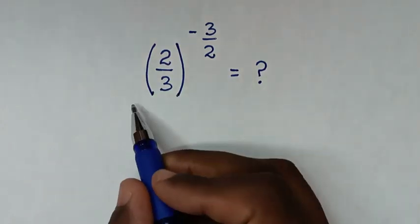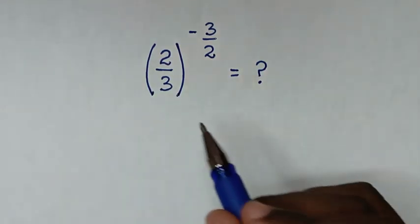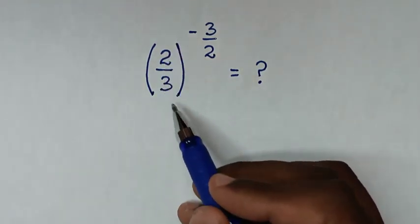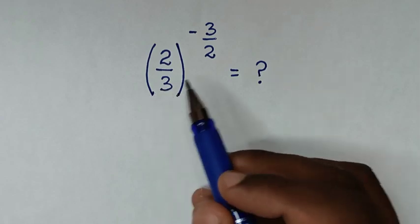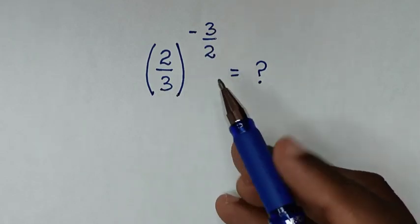Hello, you are welcome to solve this math problem, which is 2 over 3, bracket, power of negative 3 over 2.